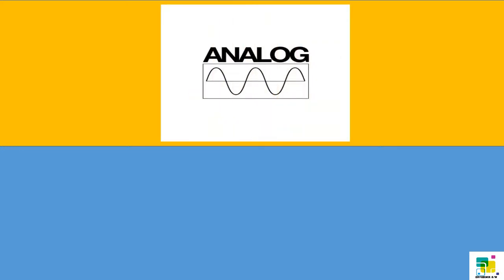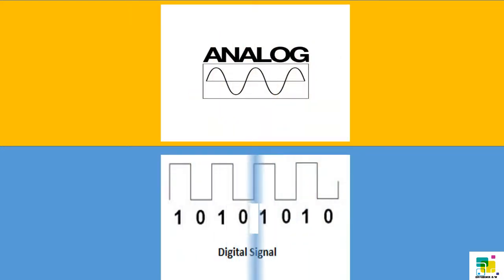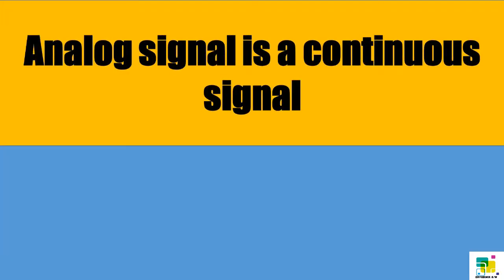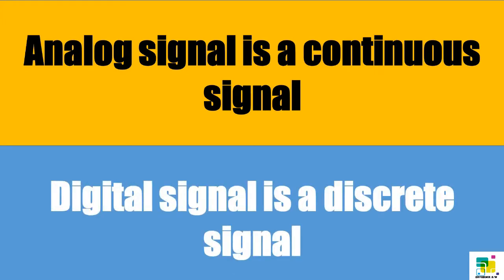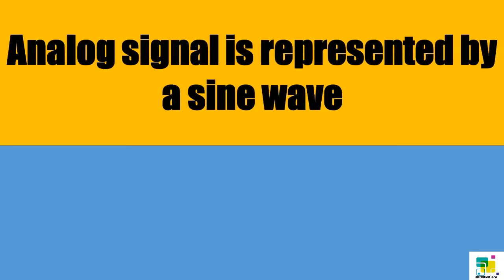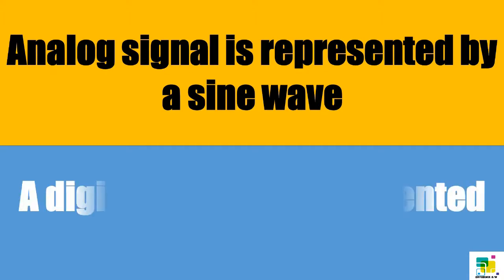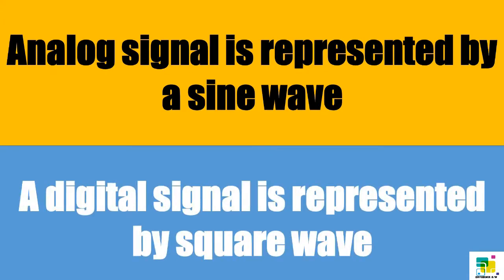In this video we will see the difference between analog and digital signals. Analog signal is a continuous signal, and digital signal is a discrete signal. Analog signal is represented by a sine wave, and a digital signal is represented by a square wave.